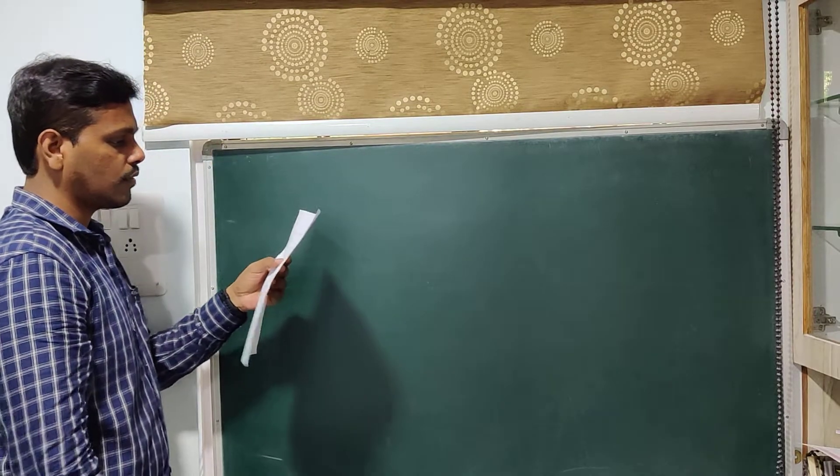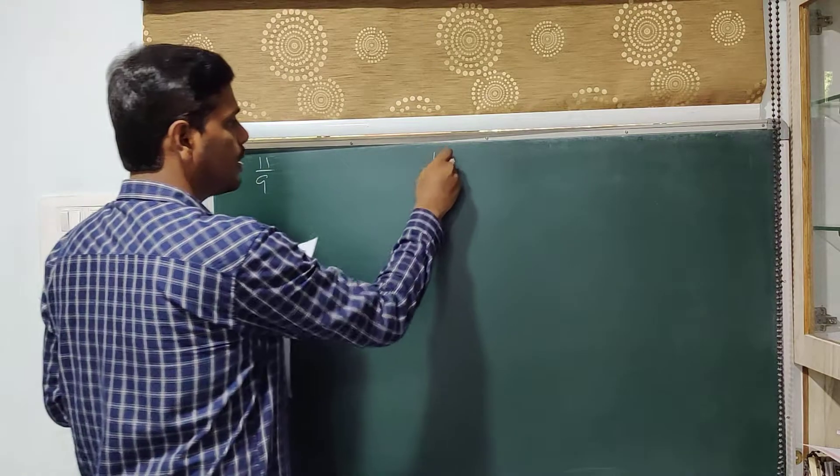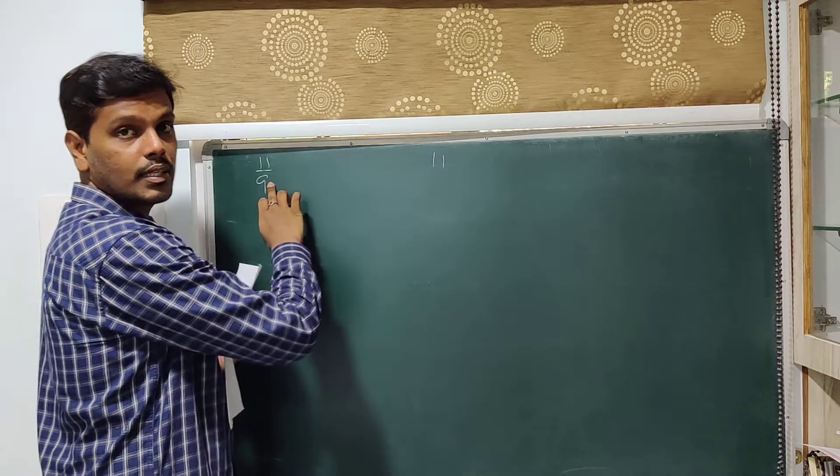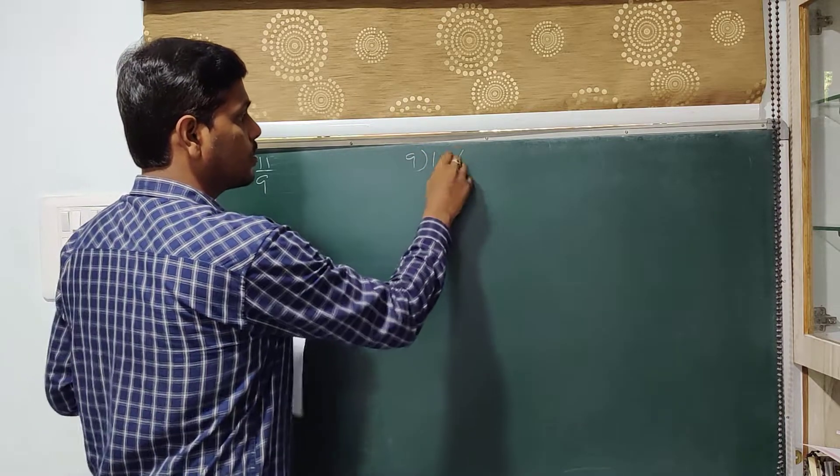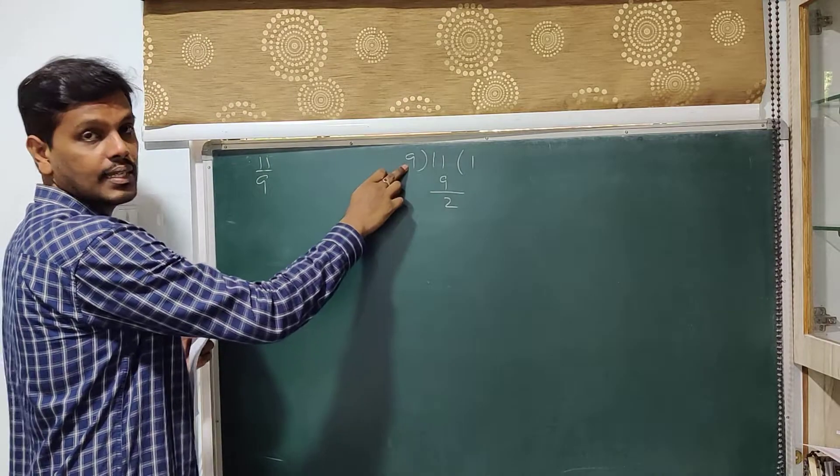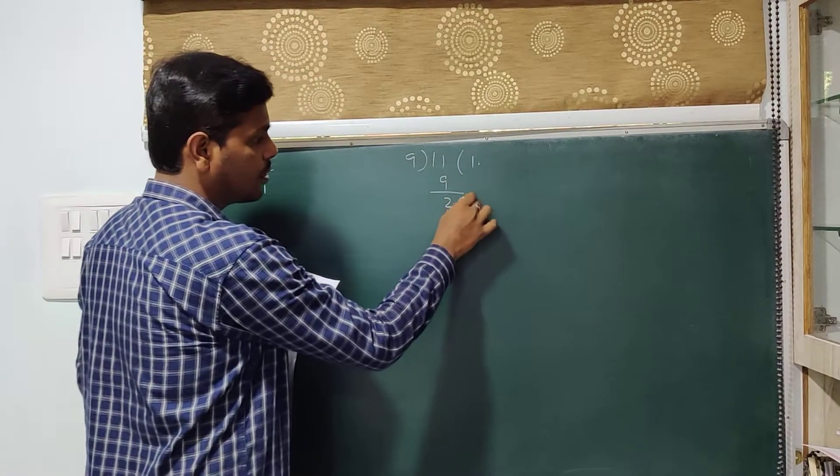So C is what I have given you as homework, 11 by 9. The numerator is your dividend and denominator is your divisor. 9 times 1 is 9, left over is 2. 2 is less than 9, so you keep a point and take 0 over here.